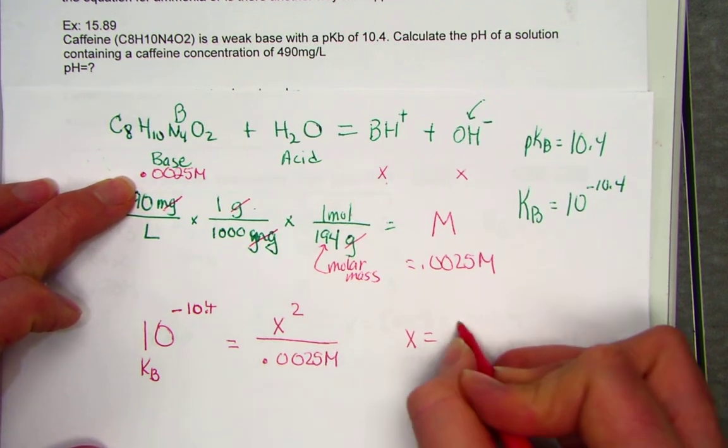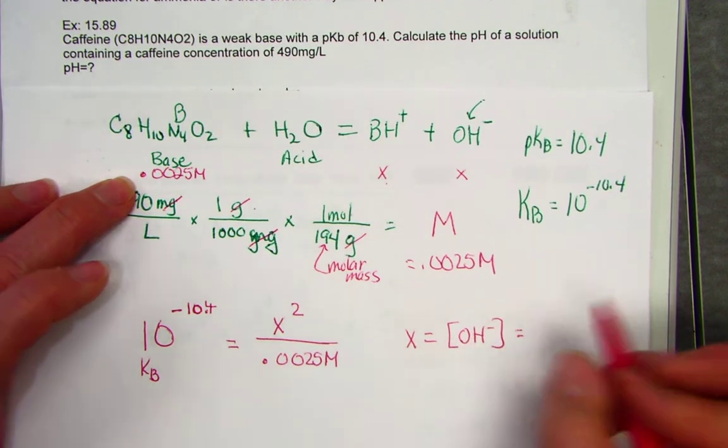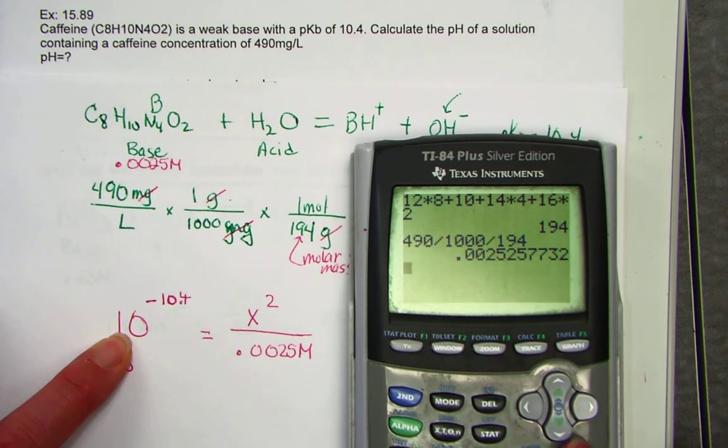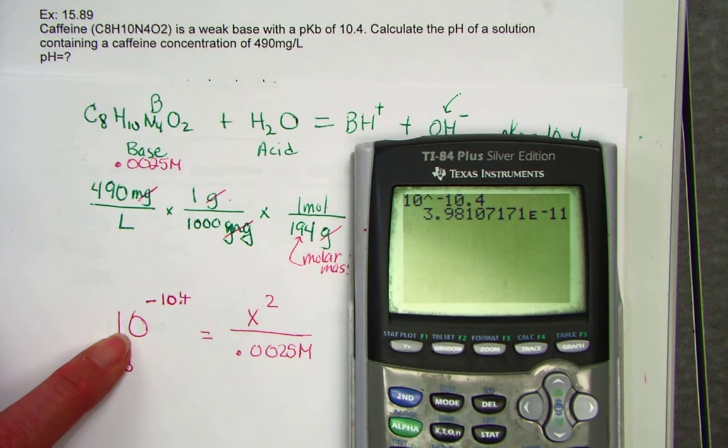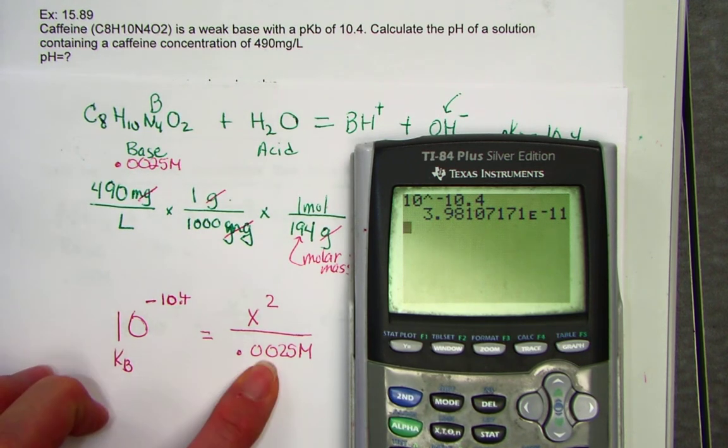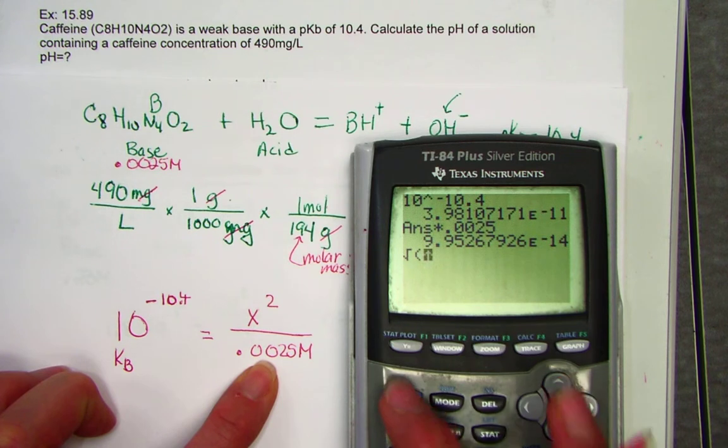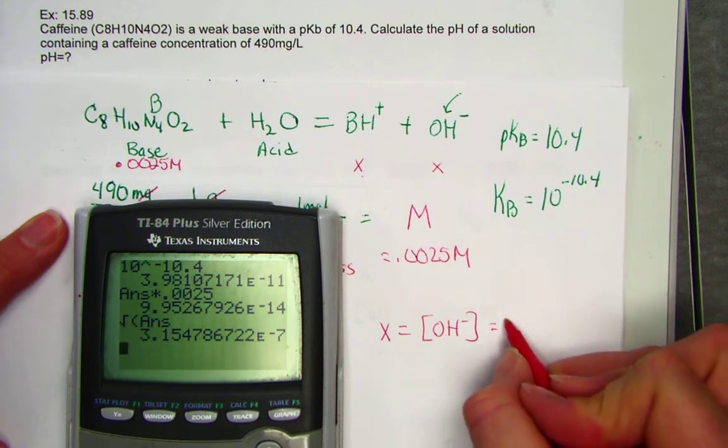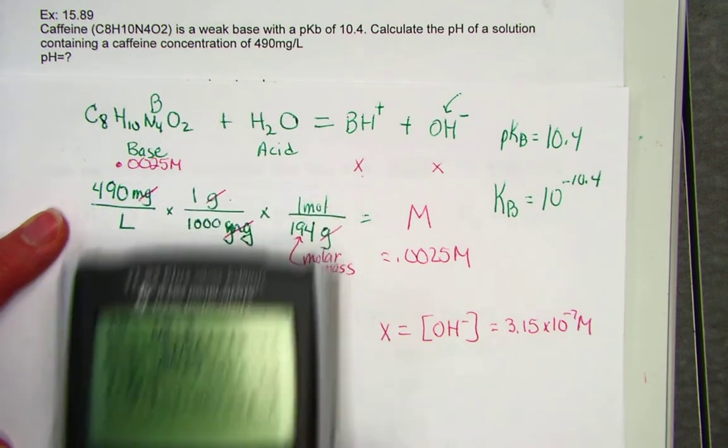When we solve for X, X is standing for the concentration of hydroxide. Let's get that part first. So, clear screen. We get 10 raised to the negative 10.4. There's my KB value on the screen. Cross multiply with 0.0025 molar. That's the value for X squared. Square root my answer, and the value of X, I'm finding 3.15 times 10 to the negative 7th molar units on hydroxide.